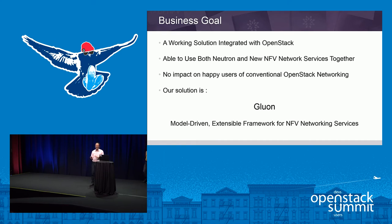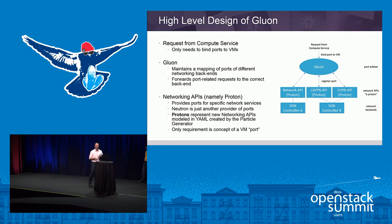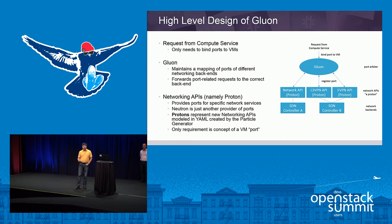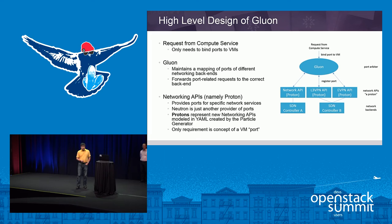We didn't necessarily intend to replace Neutron — just to demonstrate what's possible and then figure out an appropriate place to integrate over time. Now Bin Hu will describe what Gluon is. Gluon is basically composed of two major components. One is the Gluon framework, which includes a particle generator. Gluon maintains the mapping of ports and different backends in the database, and forwards port-related requests to the correct backend.